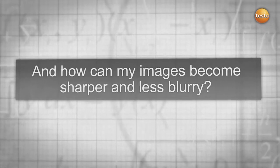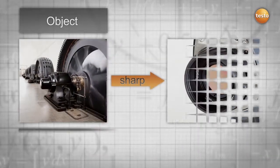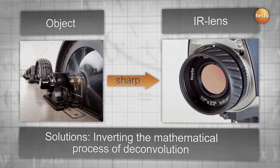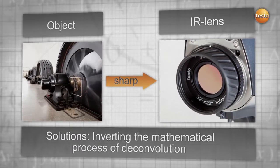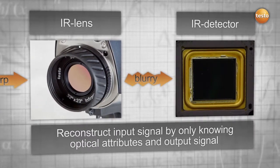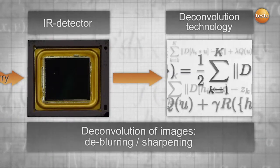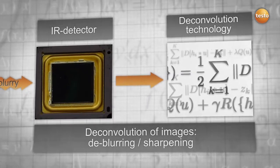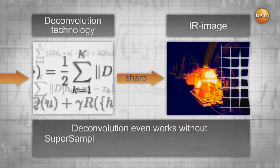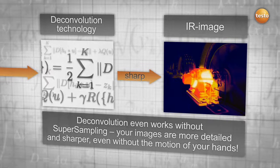Another challenge is to get clear and sharp pictures out of your measurements. With the help of deconvolution, we are able to reconstruct the input signal by recalculating the output signal with the optical attributes of the lens. Your images are therefore less blurry and sharper. And did you know that this technology works independent from supersampling? Your images are more detailed and sharper, even without the motion of your hands.